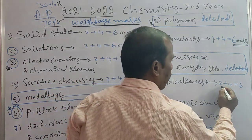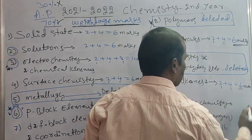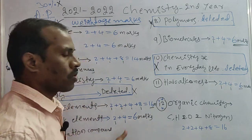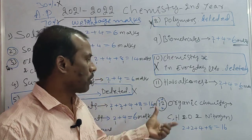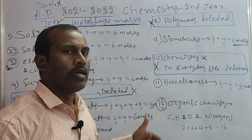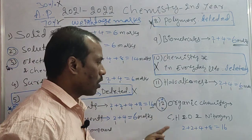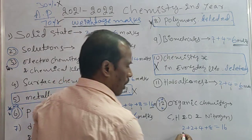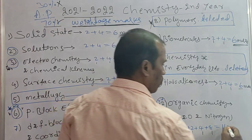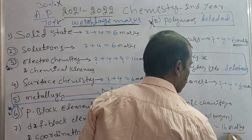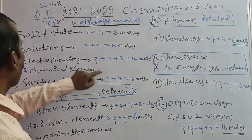Eleventh topic: Alkanes. Very short answers 1, short answers 1 — total marks are 6 marks. Twelfth topic: Organic Chemistry involving Carbon, Hydrogen, Oxygen, and Nitrogen. This topic carries long answers 1, short answers 1, and very short answers, giving a total of 16 marks. The long answer topics are important to prepare from chapter 12.